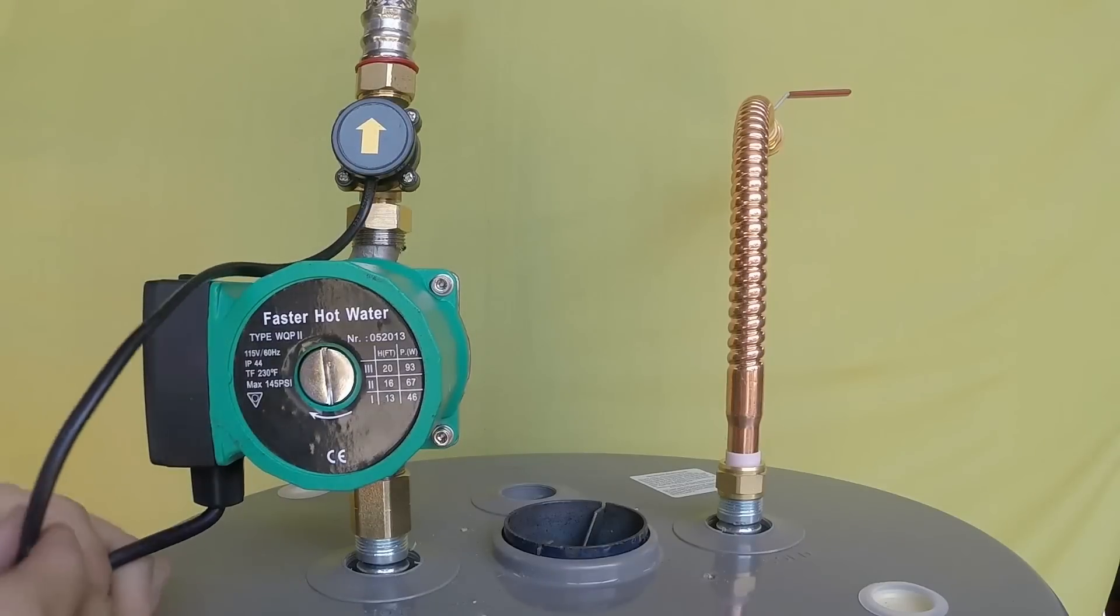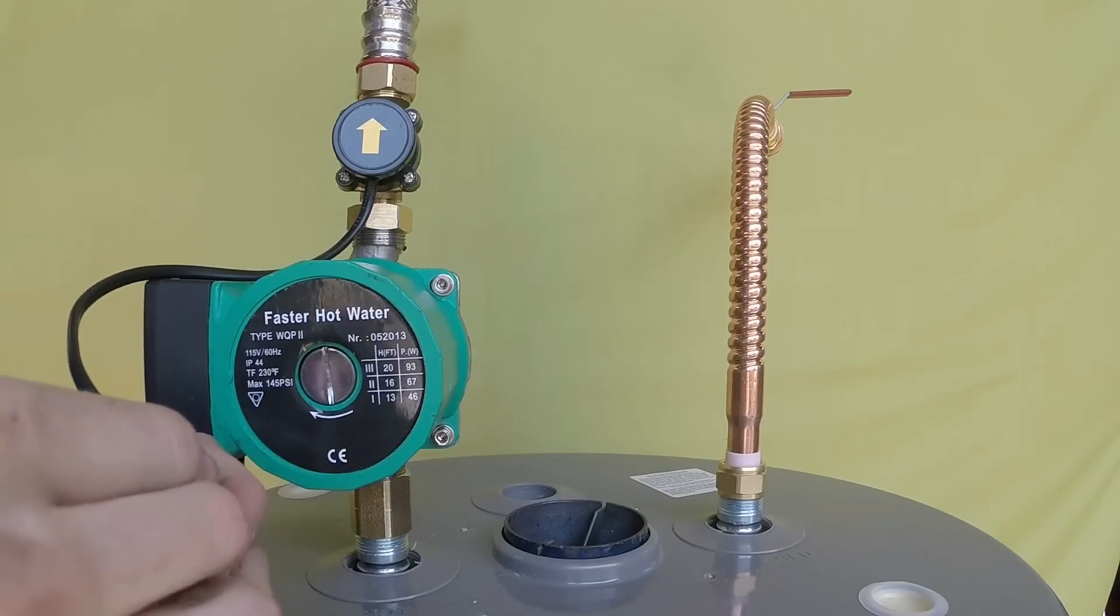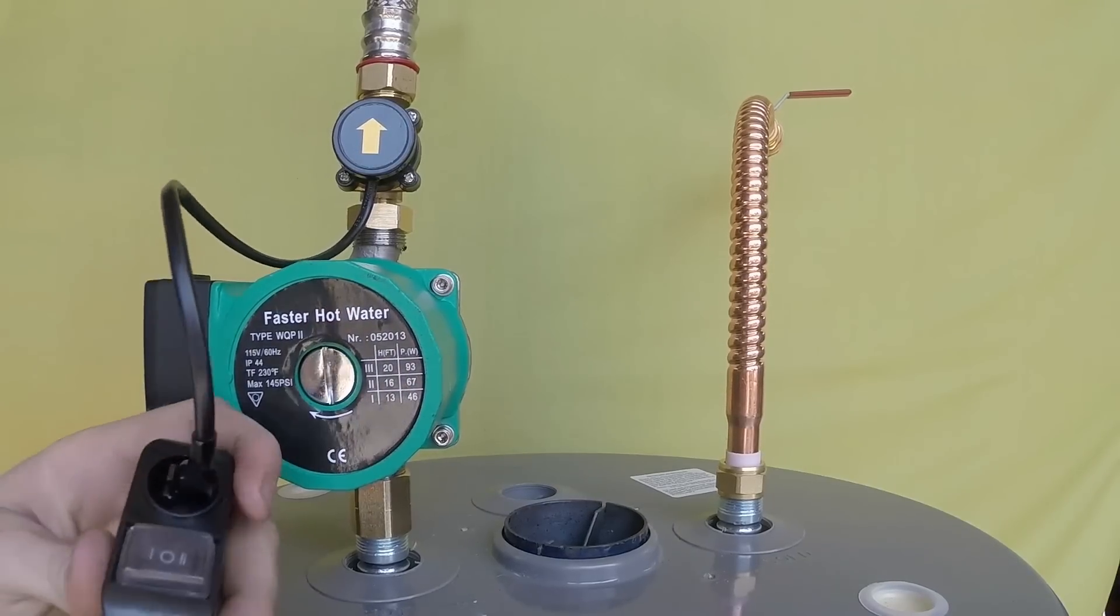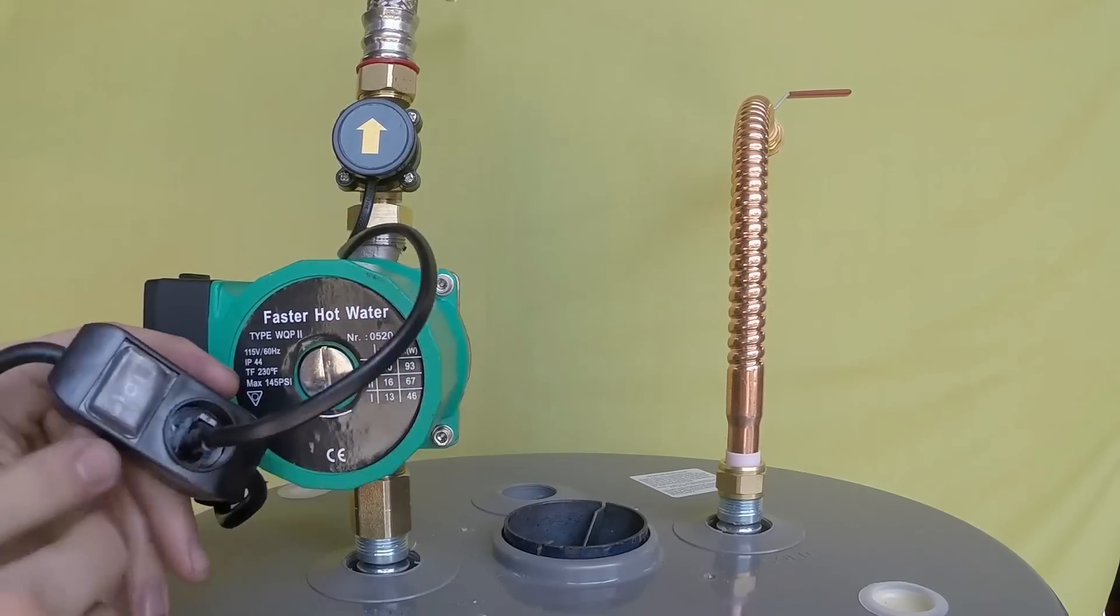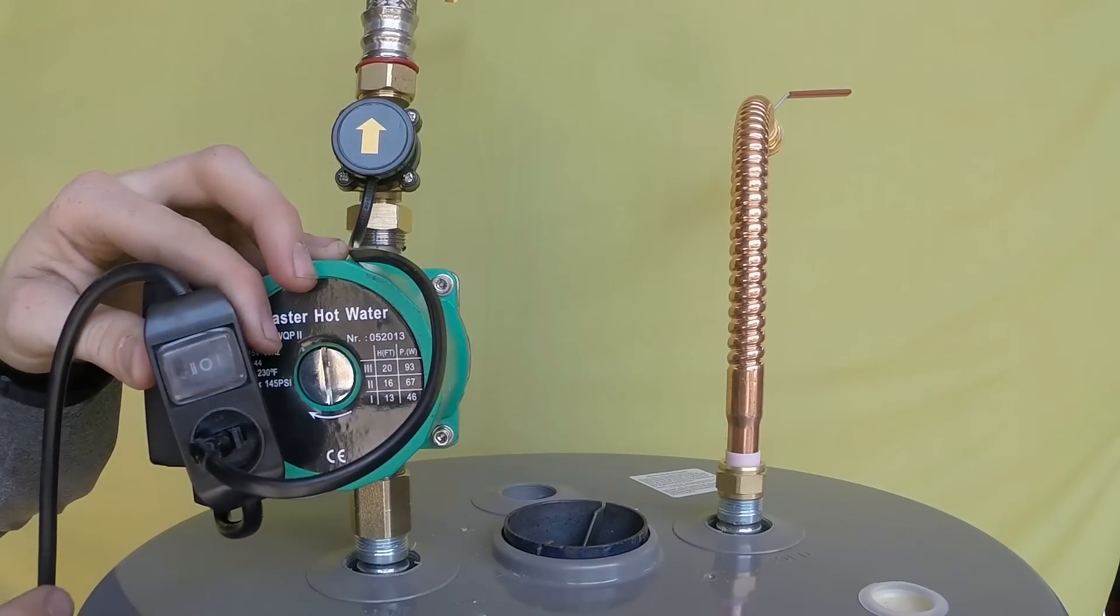insert the connector at the end of the flow monitor wire into the toggle switch. Do not force this connection. It will easily snap into place. Put the toggle switch in the auto position and we have completed the installation of the pump.